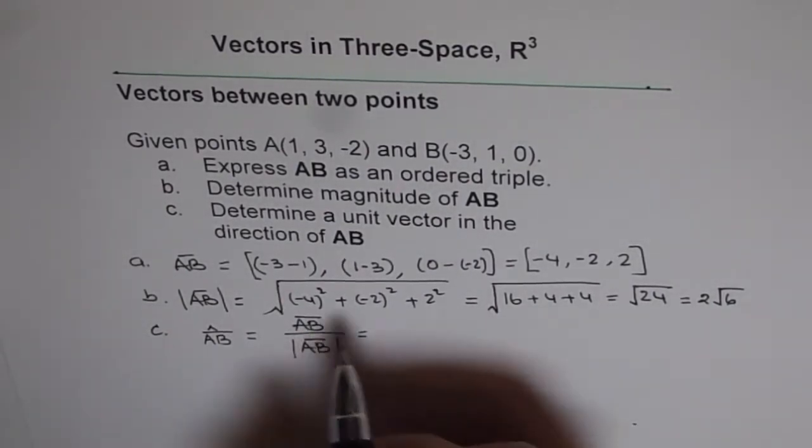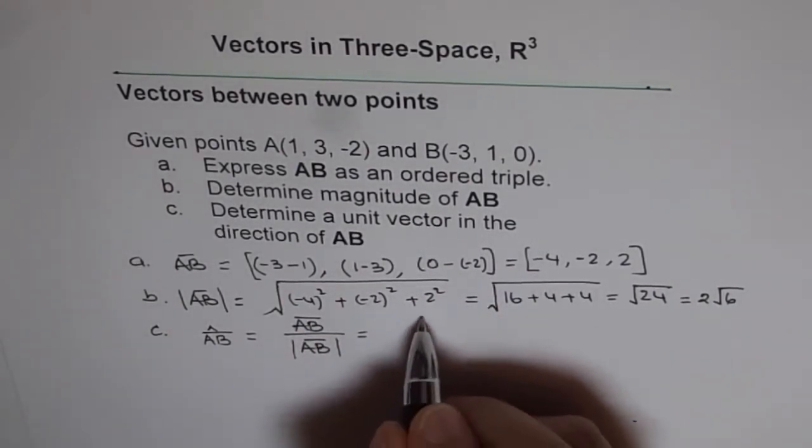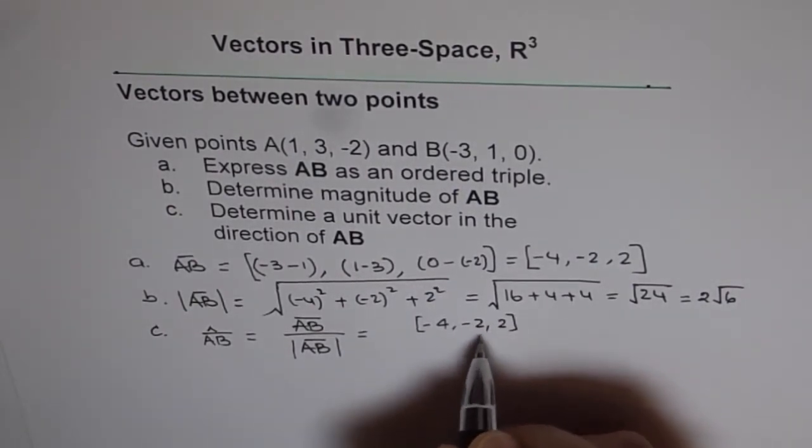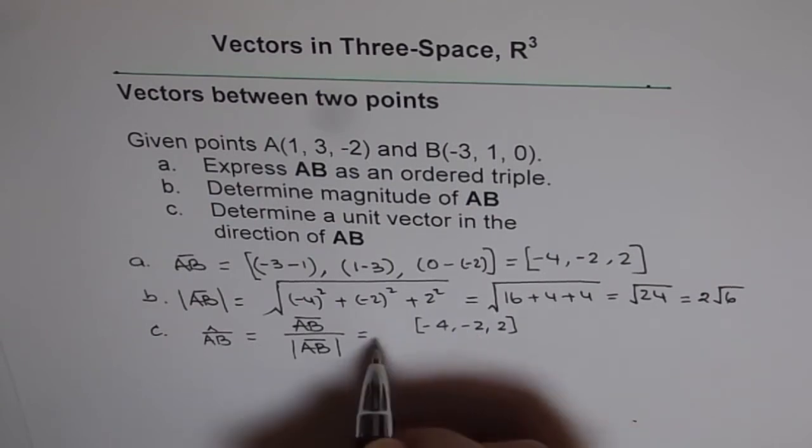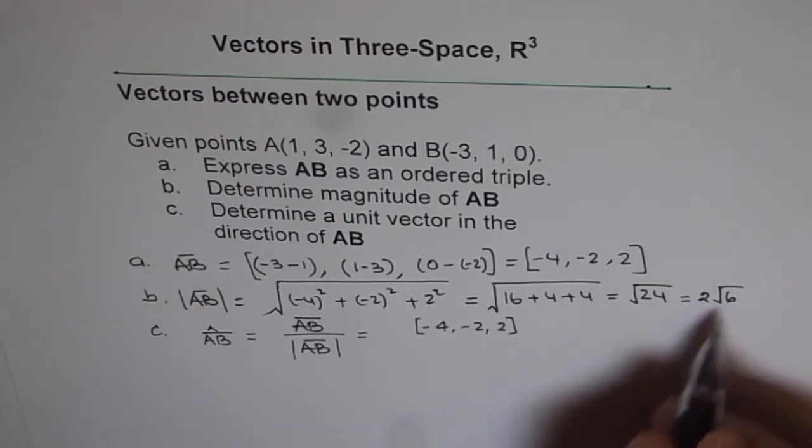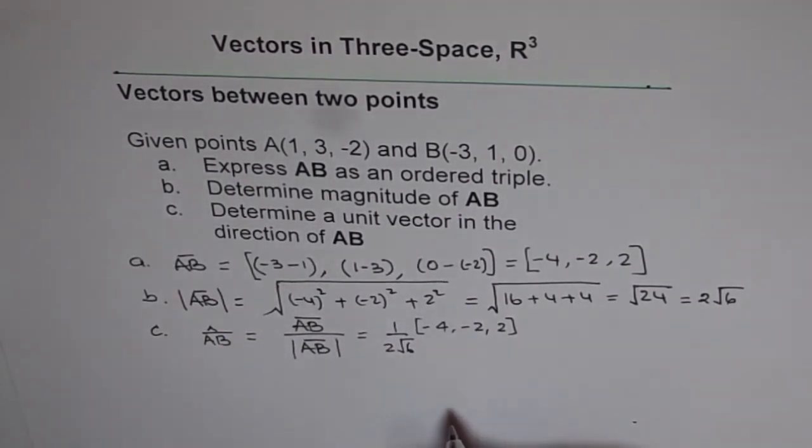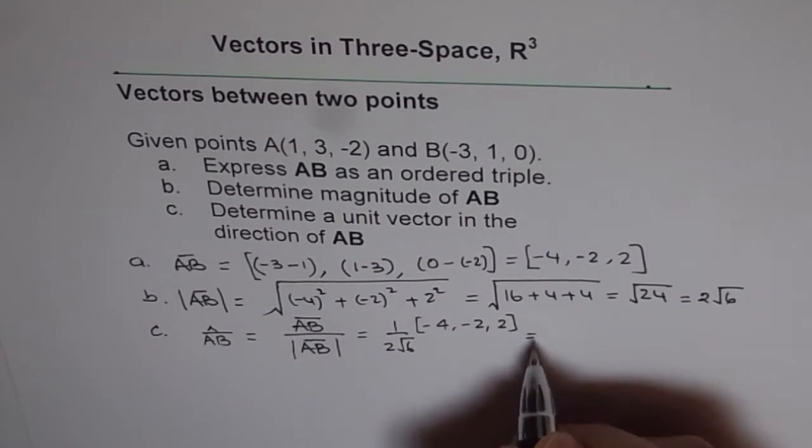The vector AB for us is minus 4, minus 2, and 2. That is the ordered triple. When you divide this by 2 square root 6, that means multiply by 1 over 2 square root 6, you get unit vector.